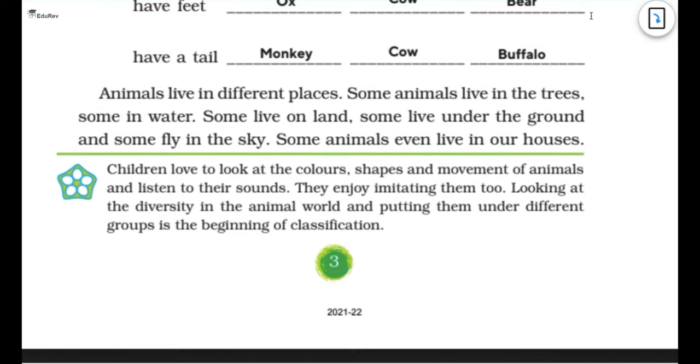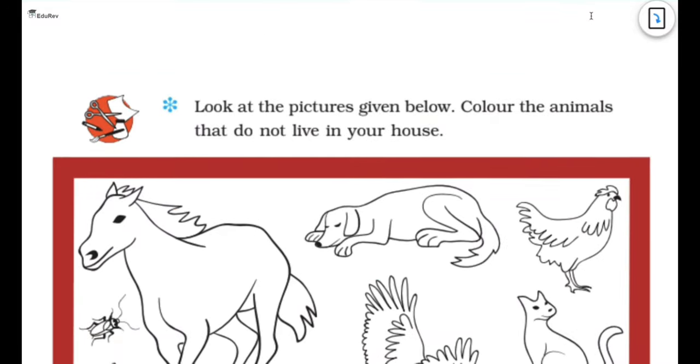Now animal lives in different places. Some live in water, some live on land, some live on trees. Some animals live in trees, some in water, some live on land, some live under the ground, and some fly in the sky. Some animals even live in our houses like dogs and cats. We people also have rats.